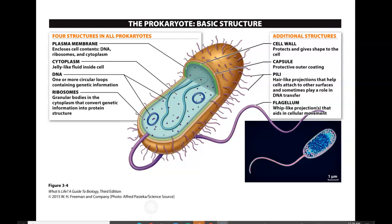Prokaryotic cells are structurally simple but extremely diverse. 'Pro' means before, and 'karyote' refers to the nucleus — so this is before the nucleus. Every cell on Earth falls into one of two categories: eukaryotic cells, which have a nucleus, and prokaryotic cells, which do not. Eukaryotic cells — found in humans, animals, and plants — have a central nucleus containing DNA, found as chromatin normally and condensing into chromosomes before division. We refer to these organisms as eukaryotes.